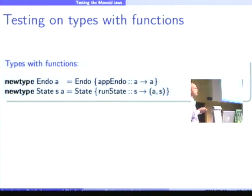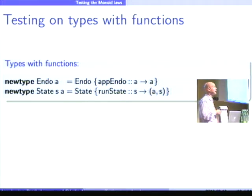Suppose now I want to test the monoid laws on functions. So, I have two types here. Endo, which contains a function of type A to A. And I have the type State S, the monoid state type, which takes state as input and returns a value, a new state.